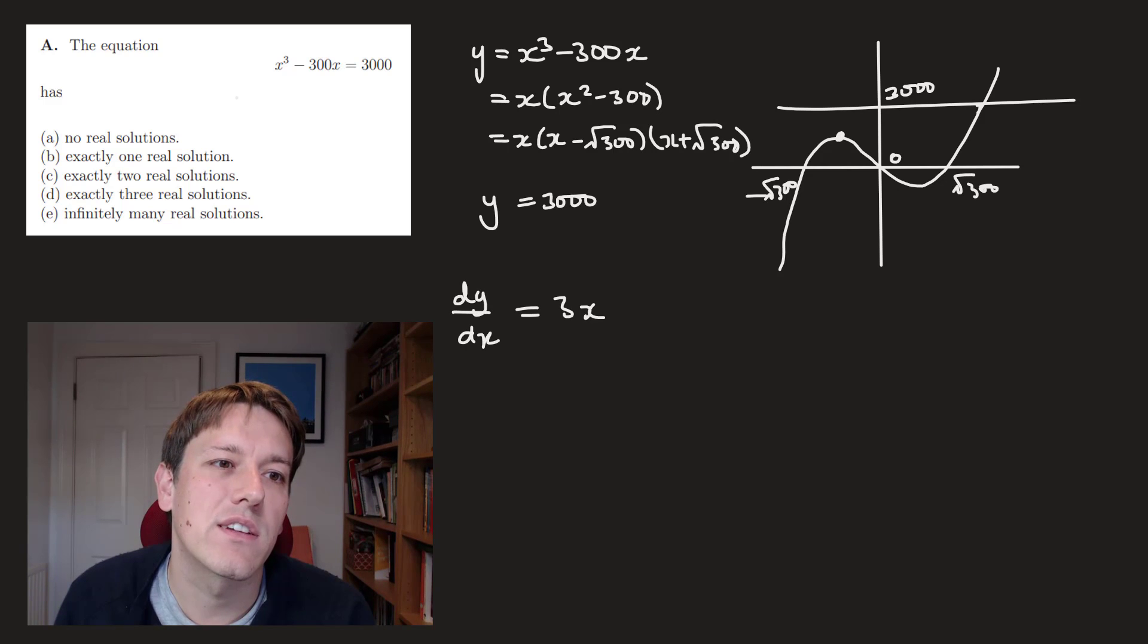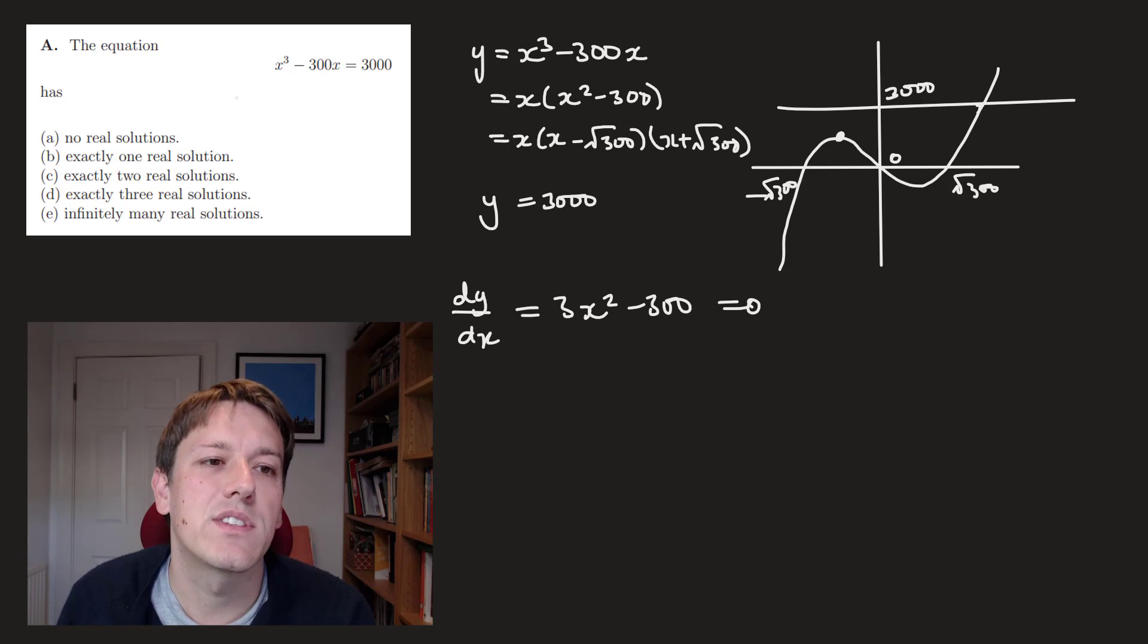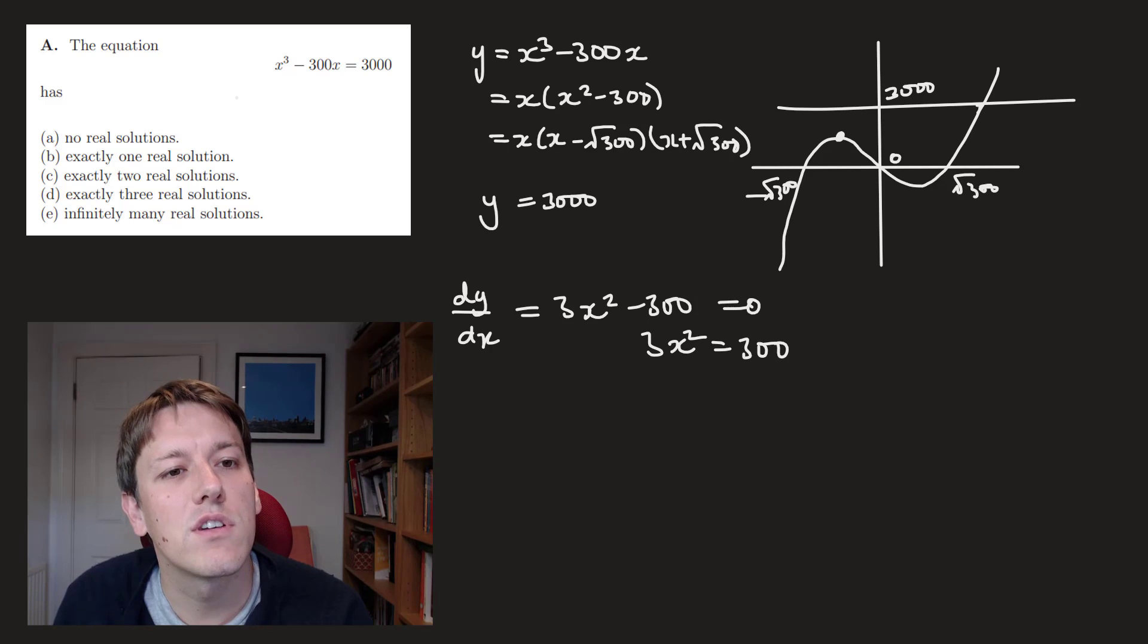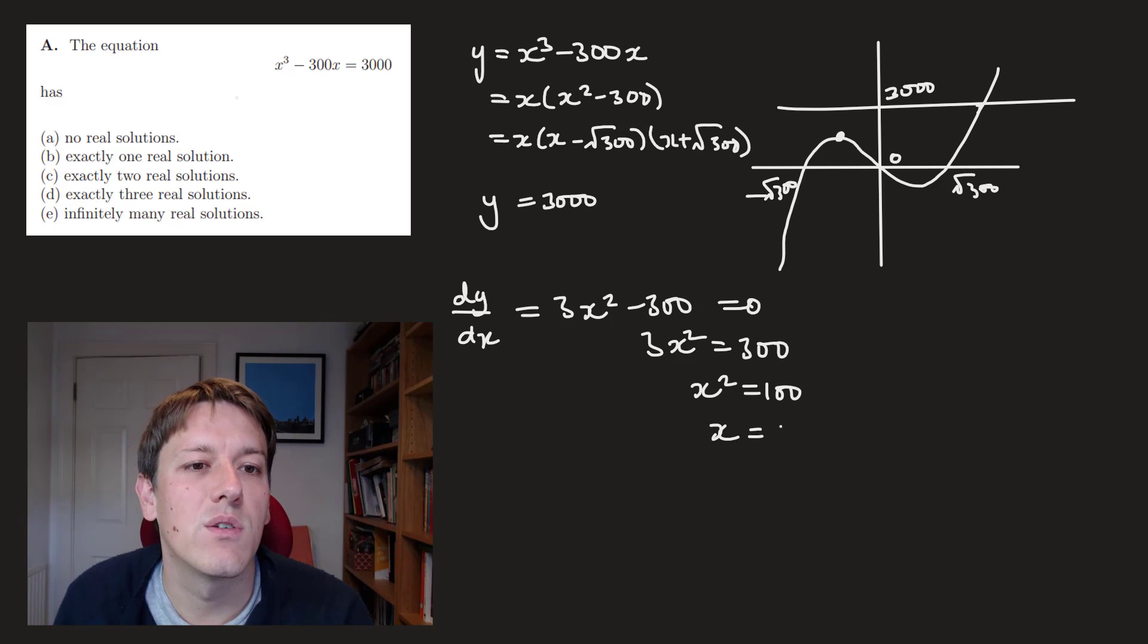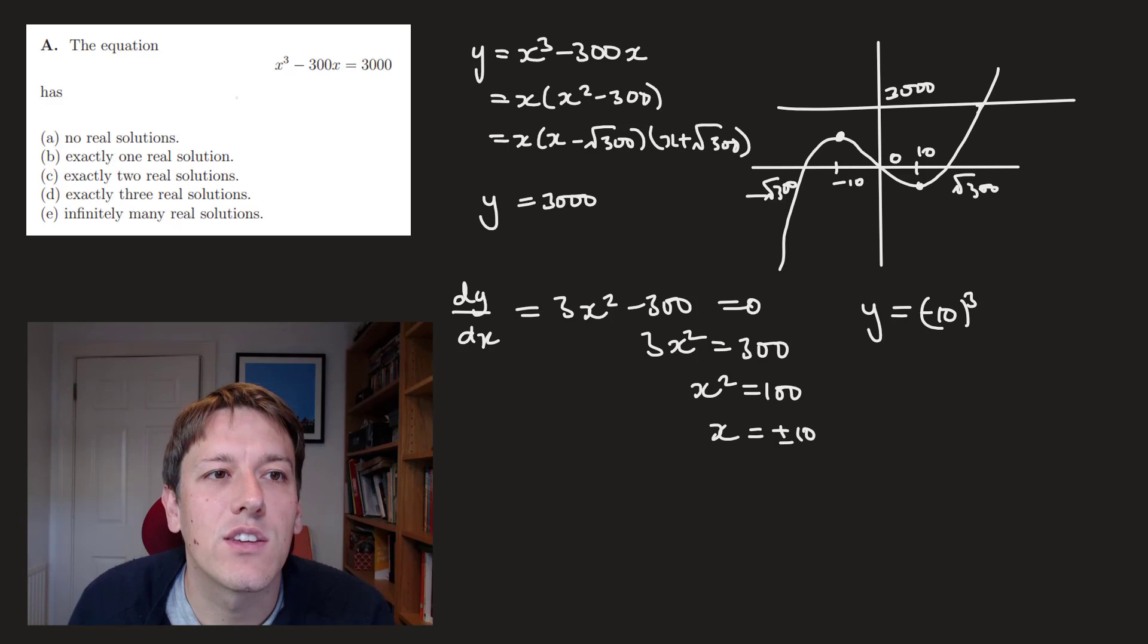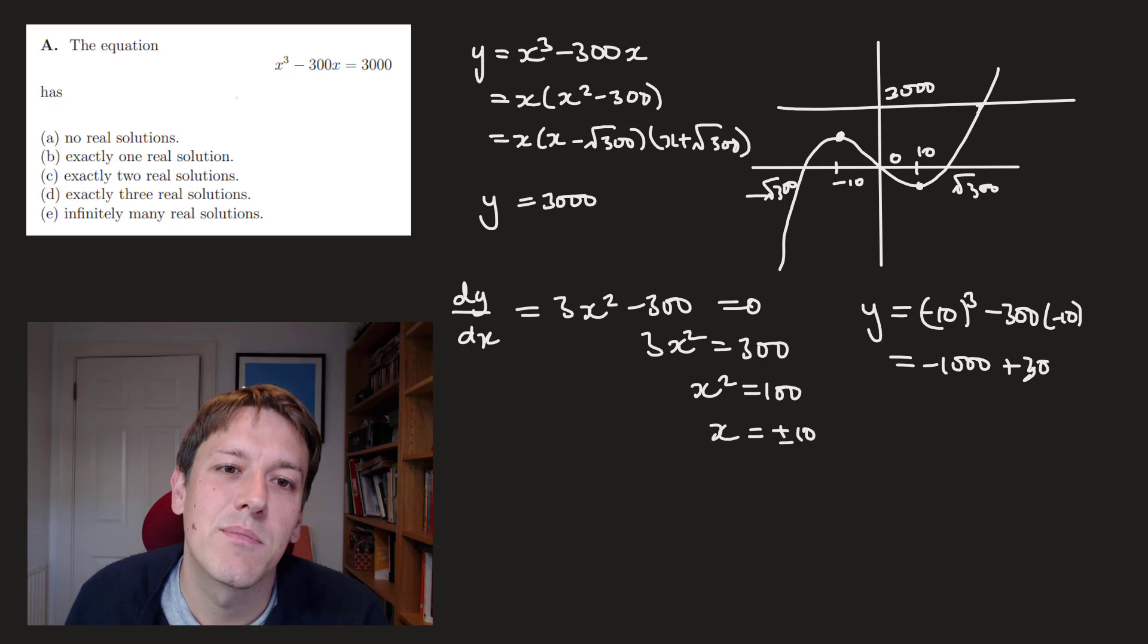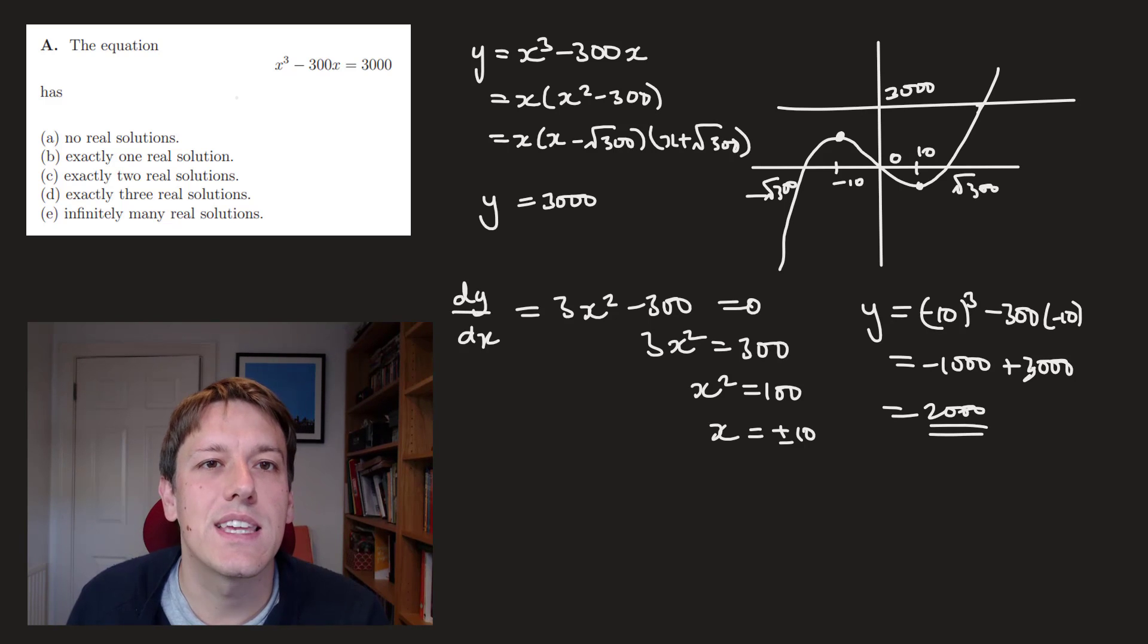So if we do dy by dx, we get 3x squared minus 300. So that's 0 where we have a stationary point. So that gives us 3x squared equals 300 or x squared equals 100. So x equals plus or minus 10. So we've got 10 and minus 10 where the stationary points are. And if we put x equals minus 10 back into the original equation, y equals x cubed minus 300x, I get minus 10 cubed minus 300 times minus 10. So that's minus 1,000 plus 3,000. So that gives us 2,000. And we can see that the graph that I've drawn here is how it should be. This is 2,000, so 3,000 is going to be above that stationary point. And so there'll only be one intersection of these two curves. And that means the answer here is b, that there's exactly one real solution.